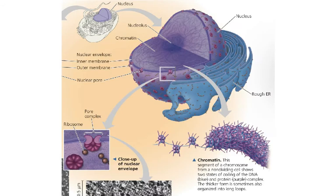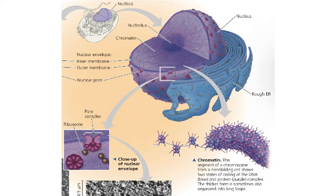First up on our list of organelles in the eukaryotic cell is the nucleus. Both plants and animals have the nucleus and this is where the DNA is stored. In prokaryotes the DNA is one chromosome in a circle, but in eukaryotes the DNA is in multiple chromosomes and it is linear. For most of the cell cycle, this DNA is in the form of chromatin, which looks like a ball of yarn. Once the cell is ready to divide, it condenses the DNA into chromosomes that look like X shapes — that's only when the cell is about to divide.